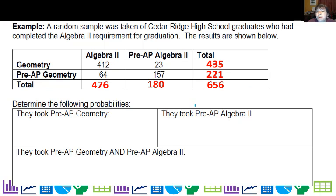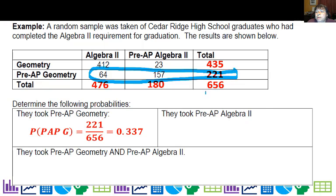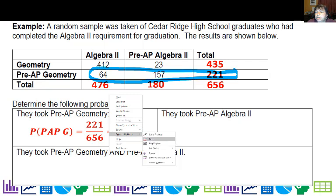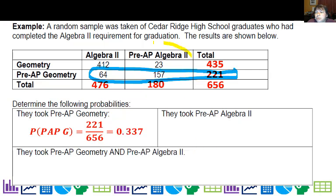So what's the probability they took pre-AP geometry? Well pre-AP geometry is this group right here, so it should be 221 out of 656. What's the probability they took pre-AP Algebra 2? Well that would be this group right here, so it would be 180 out of 656 or 0.274.